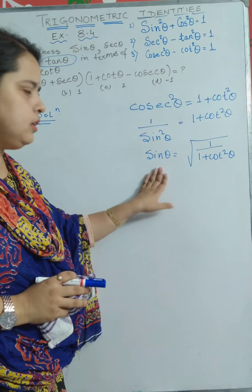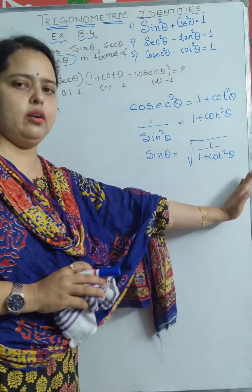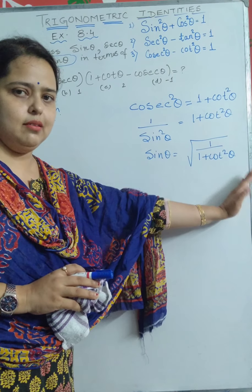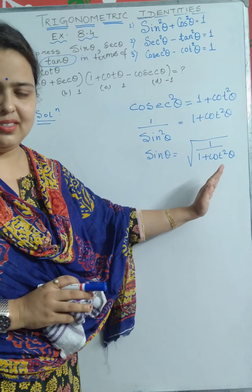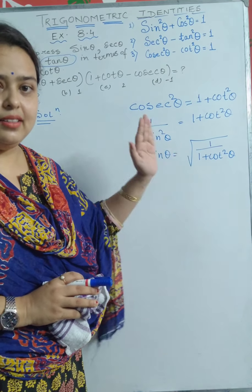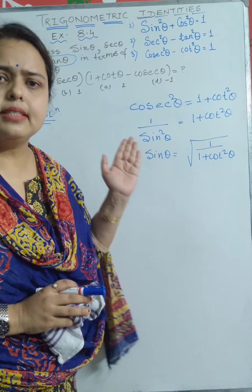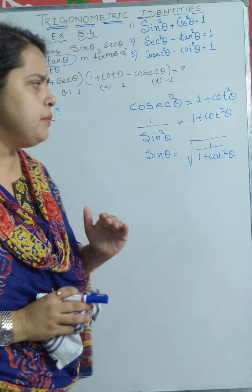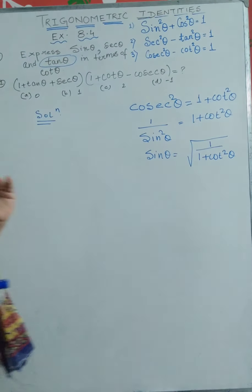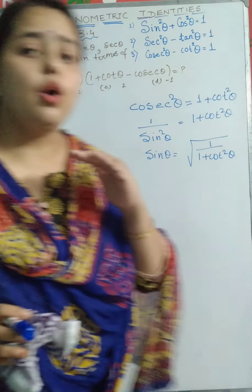So sin θ = √(1/(1 + cot²θ)). Sin θ is on one side and only cot θ is on the other side. This is what they want — to express sin θ only in terms of cot θ.